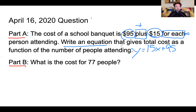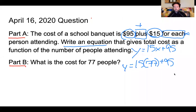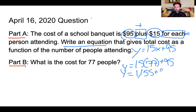The second part, Part B, asks: what is the cost for 77 people? I'm going to use my equation: y equals 15 times 77 plus 95. I'm just going to follow PEMDAS and solve.